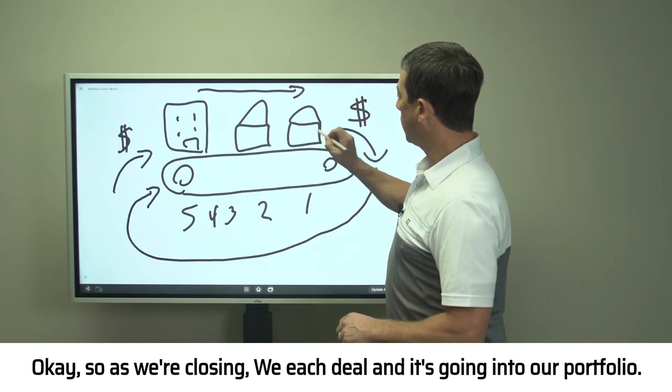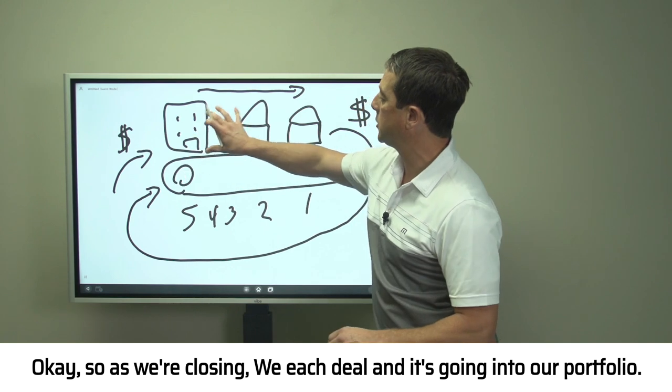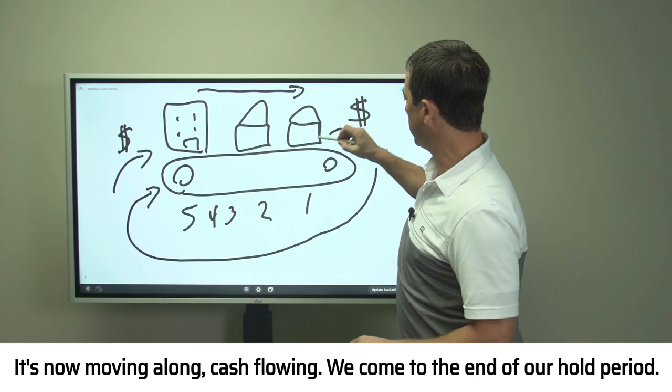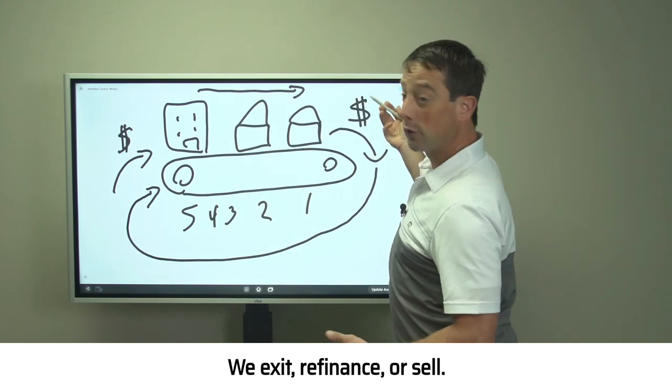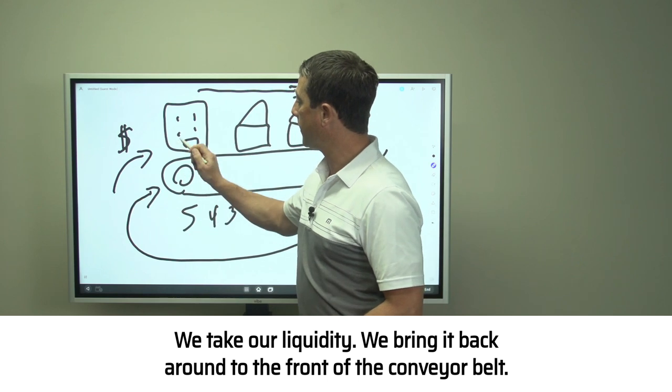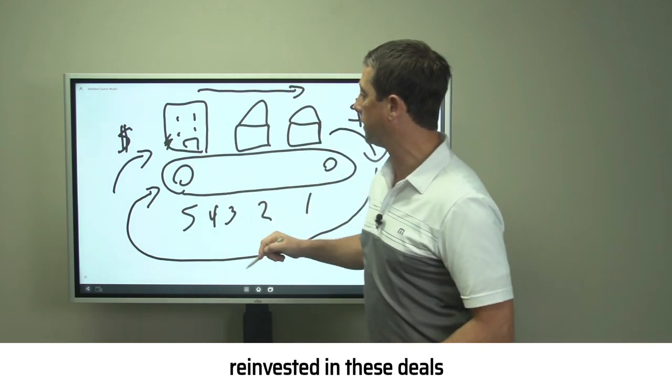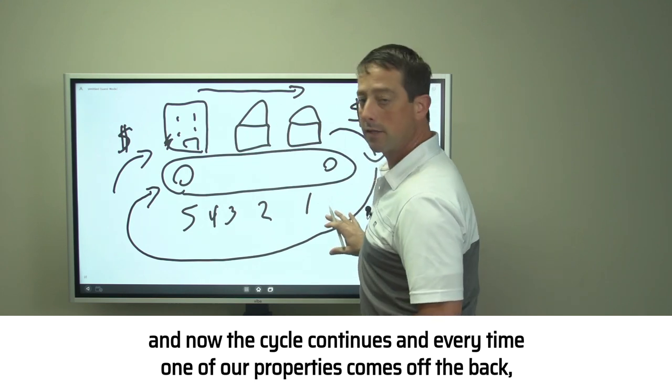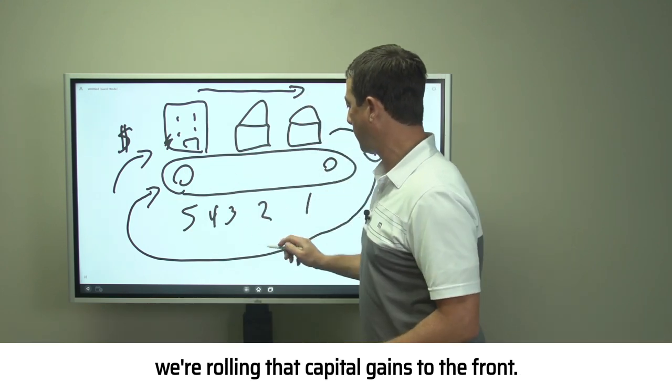I'm not here to sell you anything, so I'm telling you the truth: this takes time. As we're closing each deal and it's going into our portfolio, it's now moving along. We're cash flowing. We come to the end of our hold period, we exit—refinance or sell. We take our liquidity, bring it back around to the front of the conveyor belt, reinvest it in these deals, and now the cycle continues.